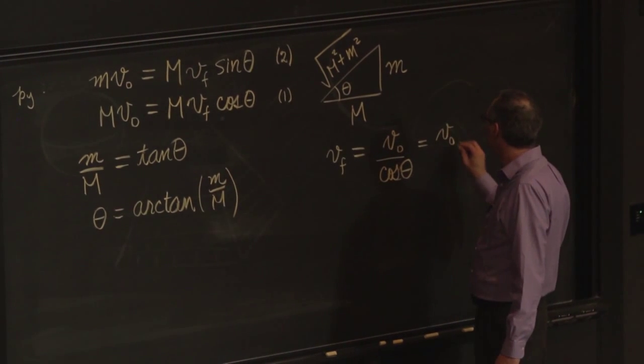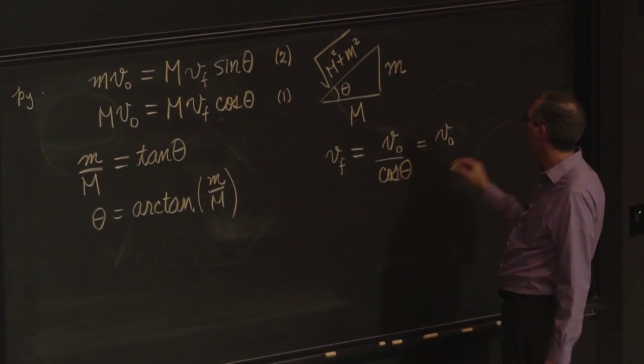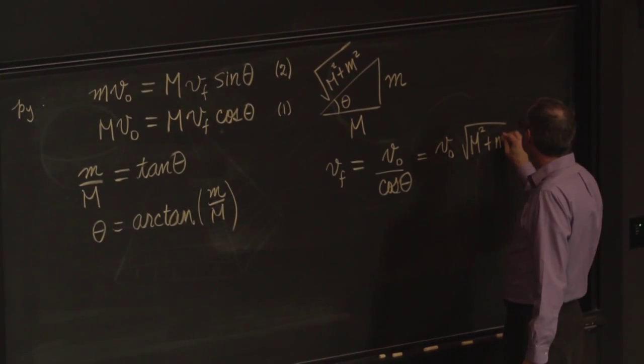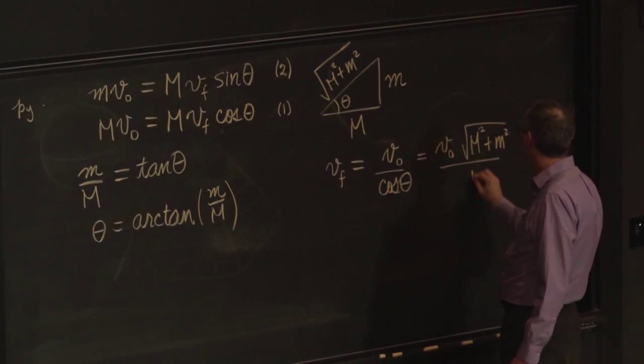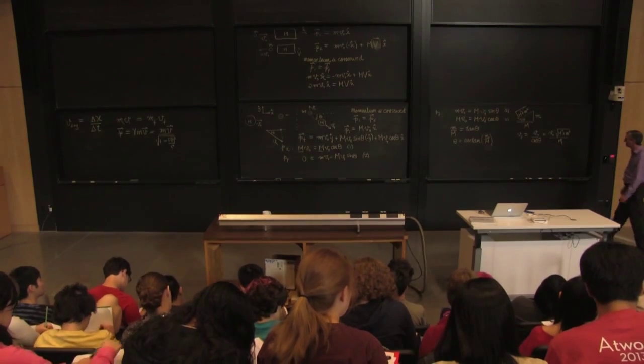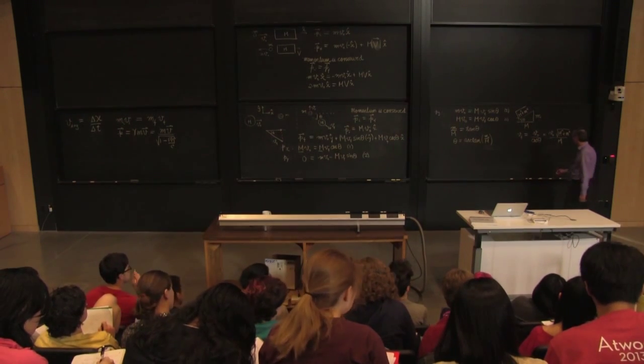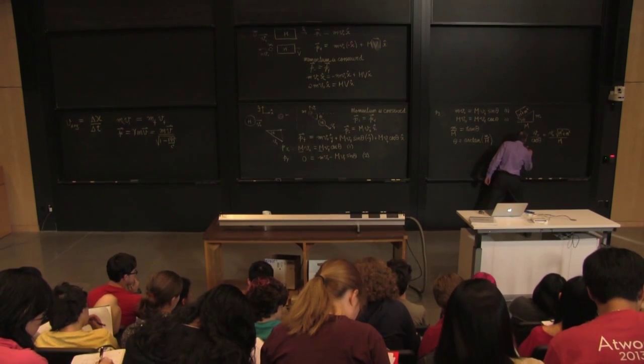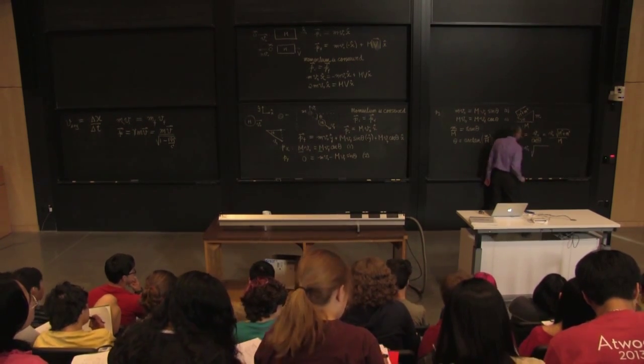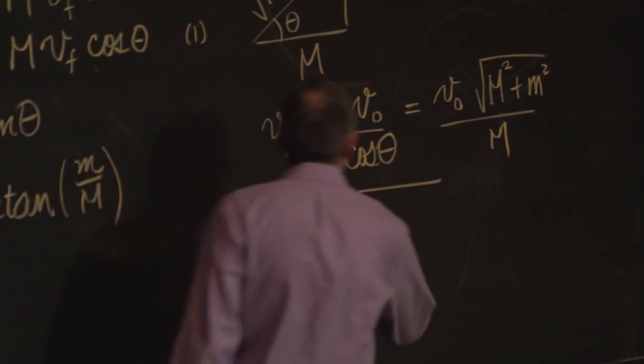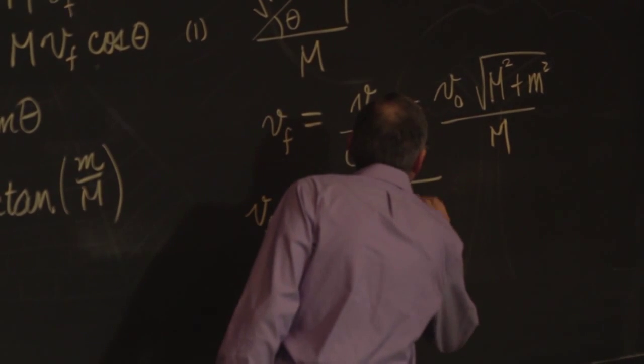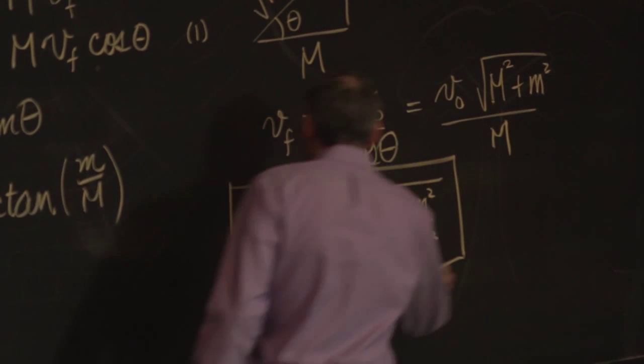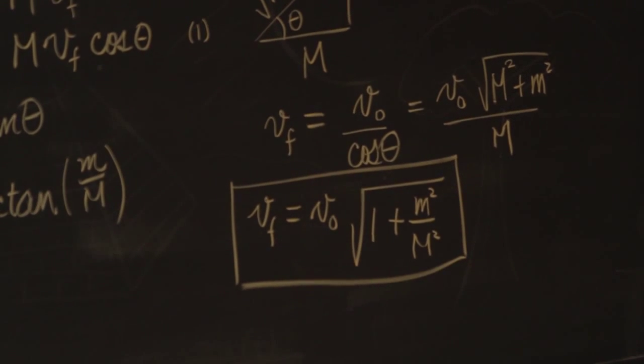So v final, since it's in the bottom, I have to flip it over. I get square root M squared plus m squared divided by M. Or if I pull the M from the denominator inside to tidy up and get rid of dimensions as much as possible, I get that.